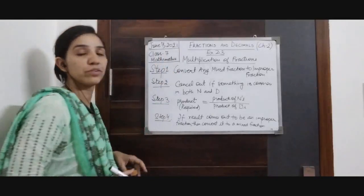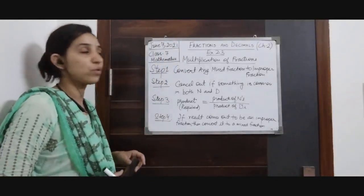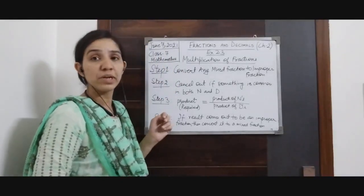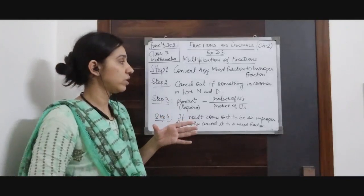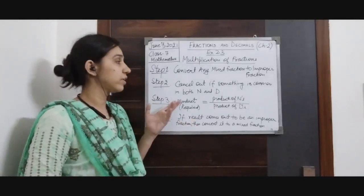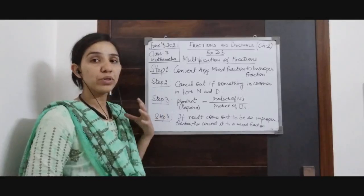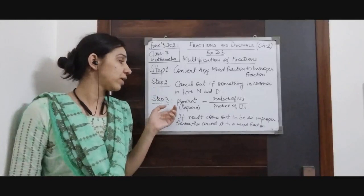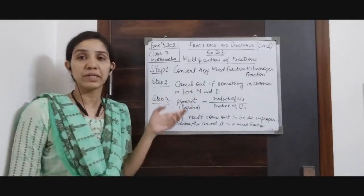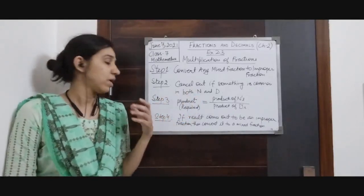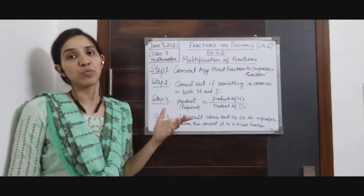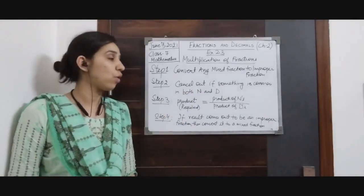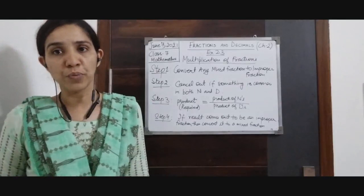To summarize: for multiplication of a fraction with another fraction, follow 4 steps. First, convert any mixed fraction to improper fraction. Second, cancel out any common term in numerator and denominator. Third, the required product equals product of numerators divided by product of denominators. Fourth, if the result is improper, convert it back to mixed fraction. Your answer will always be a mixed fraction or a proper fraction.